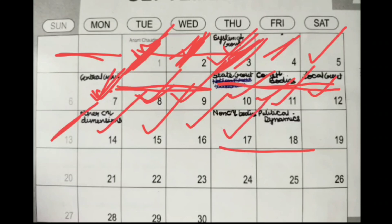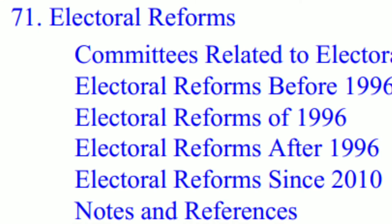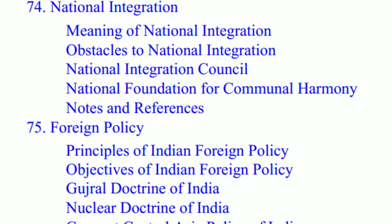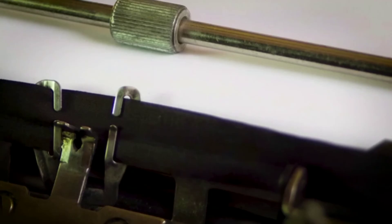Day eighteen is the easiest, because you're just left with chapter 71 — Electoral Reforms — and 2017 also had a question on electoral reforms, so don't skip it. Then chapters 74, 75, and 76: very easy, very short, very sweet. And you are done with Indian Polity.